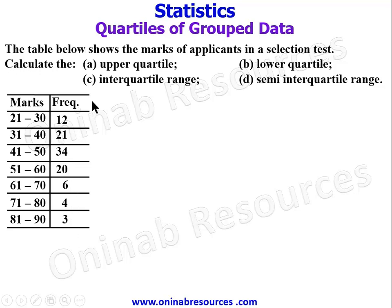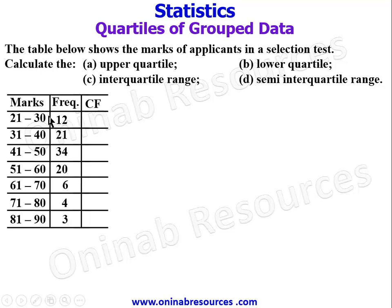From our formula we need specifically the lower class boundary of each class interval, and we need the cumulative frequency. So we create those columns. The first cumulative frequency is 12. The next is 12 plus 21 which gives 33. Then 33 plus 34 gives 67. Then 67 plus 20 gives 87. Then 87 plus 6 gives 93, 93 plus 4 gives 97, and 97 plus 3 gives 100.